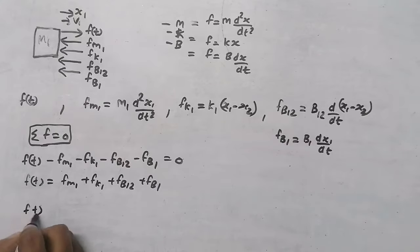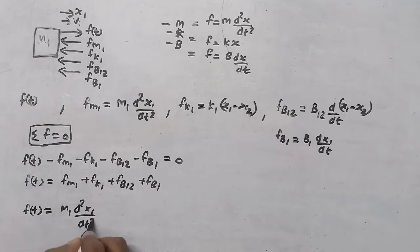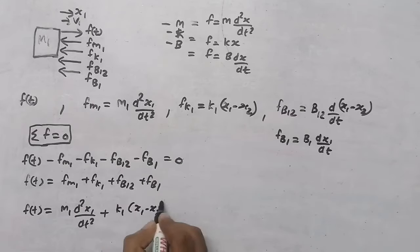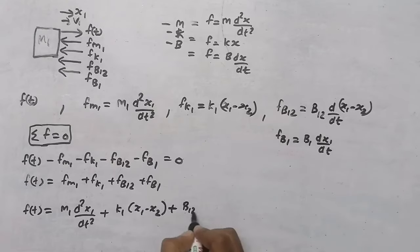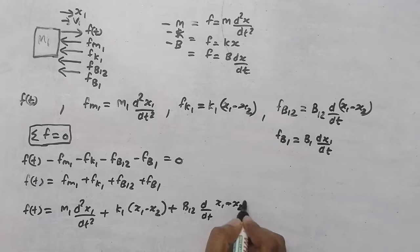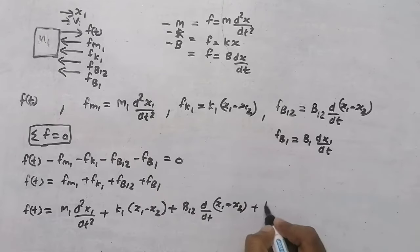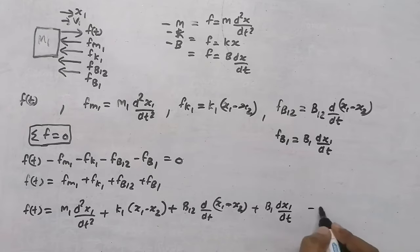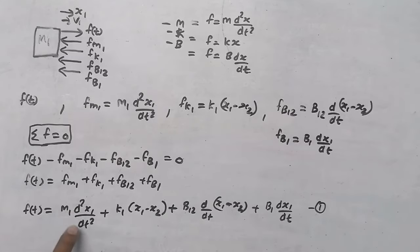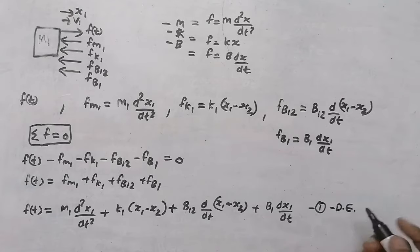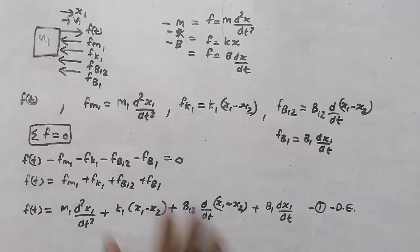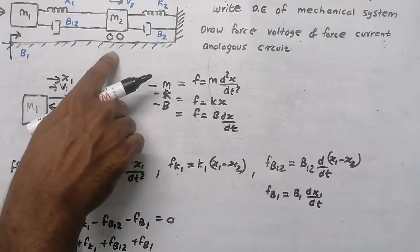Substituting: f(t) = m1·(d²x1/dt²) + k1·(x1 - x2) + b12·d(x1 - x2)/dt + b1·(dx1/dt). This is our first differential equation. Since d/dt·(dx/dt) is a differential equation, this is the first differential equation of the mechanical system. Now we need to draw the free body diagram of mass m2 to get the second differential equation.